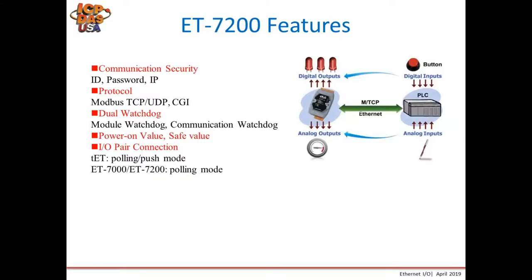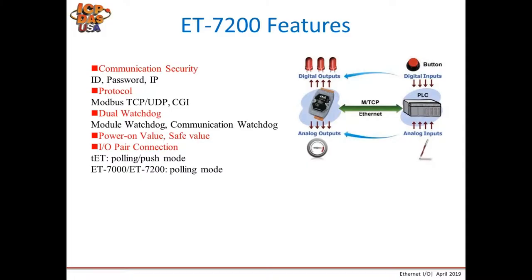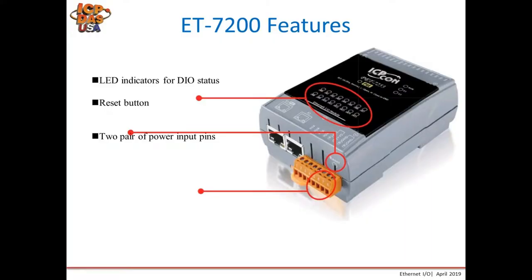IO pairing is also available for the ET-7200 and ET-7000 series. This slide shows the reset button of the ET-7200, the power inputs, and the LED status indicators for digital IO.